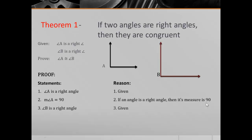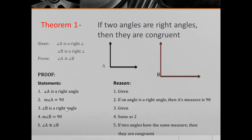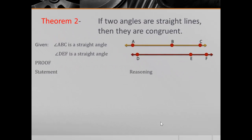Now that we've got the measure, we're going to say angle B is a right angle — again, that's given. Then we would say the measure of angle B equals 90, and here you can say just the same reason as step two. And then, last but not least, we prove that they're congruent by the definition of congruent angles: if two angles have the same measure, then they are congruent.